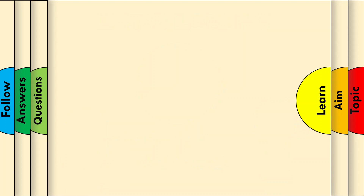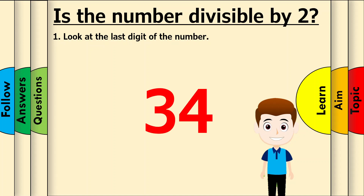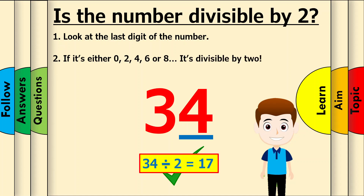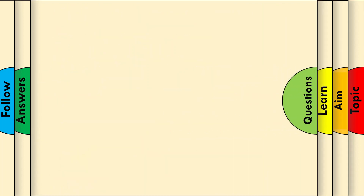Let's look at the secret for working out which numbers are divisible by 2. First, look at the last digit of the number. Let's take 34 for example. In this case, the last digit is 4. If this digit is either 0, 2, 4, 6, or 8 — which it is — it's divisible by 2. Let's just check by doing 34 divided by 2, which is the whole number 17. Great work! Now you can work out if a number is divisible by 2 without calculations.